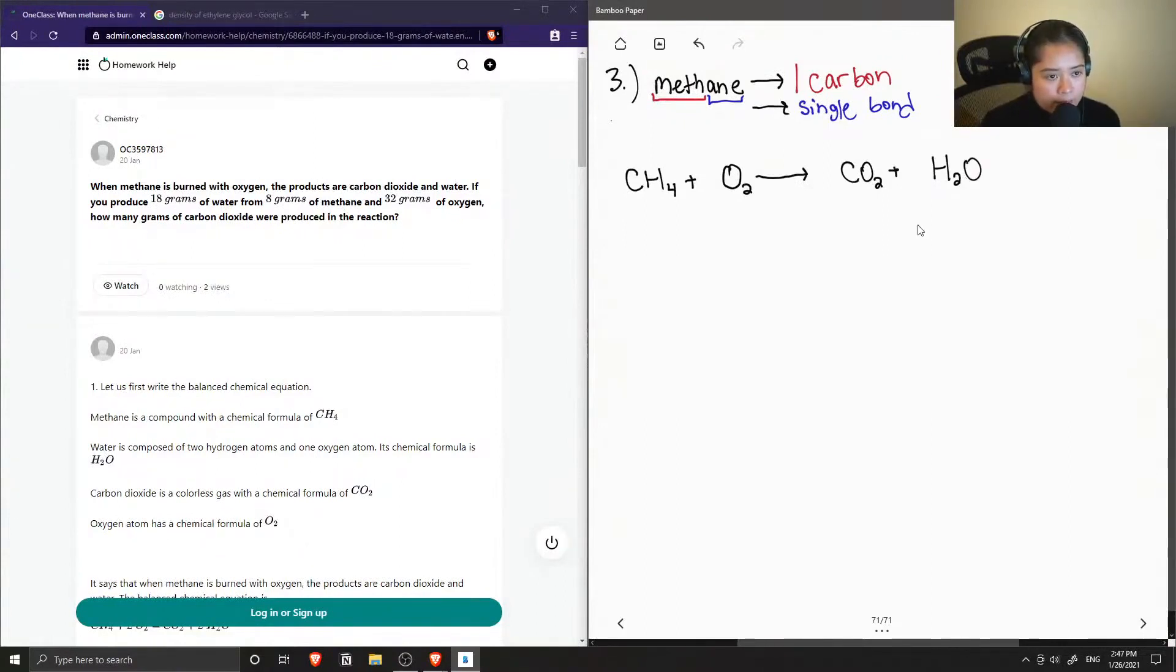Okay, so now we need to balance out this reaction. We have one carbon on both our products and reactant side. But on our product side, we only have two atoms of hydrogen, but on our reactant side we have four. So I'm just going to put a coefficient of two in front of my water. And now we have our hydrogens balanced and four oxygens on our product side and only two oxygens on our reactant side. So I'm also just going to put a two in front of our oxygen. So now we have our balanced equation.